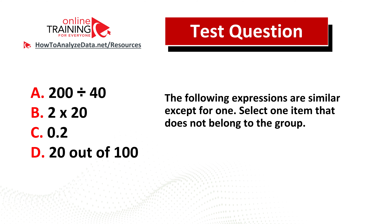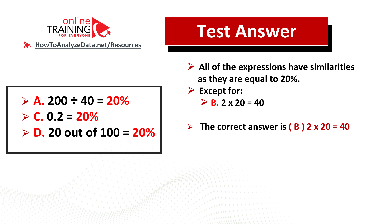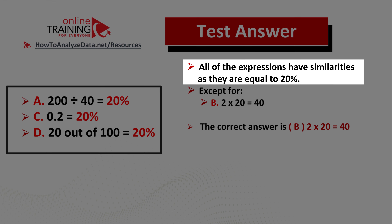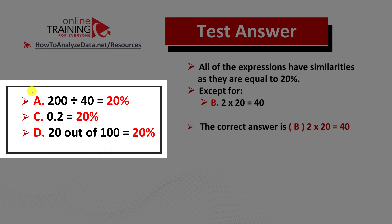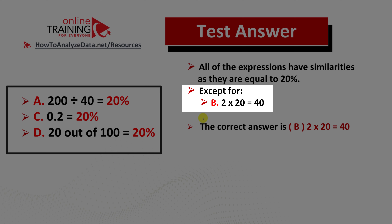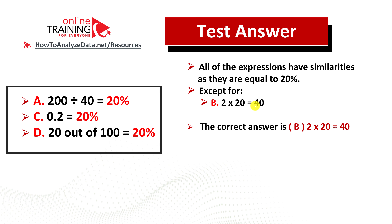Did you figure out the solution? Let's see how we can solve this challenge together. All of the expressions have similarity as they all equal 20%. Choice A: 40 is 20% of 200. Choice C: 0.2 is already 20%. Choice D: 20 out of 100 is 20% too. Except for one — choice B: 2 multiplied by 20 is 40, which has nothing to do with 20%.